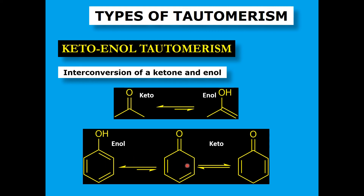In phenol, the enol form is more stable than the keto form. The lone pair on oxygen can be involved in extended resonance, providing stability. Additionally, phenol is aromatic, and aromaticity brings more stability to the molecule. The keto form of phenol is not aromatic, so converting phenol to the keto form means going from a more stable to a less stable situation — which is usually not favorable. The molecule will most probably exist as phenol rather than the keto form.